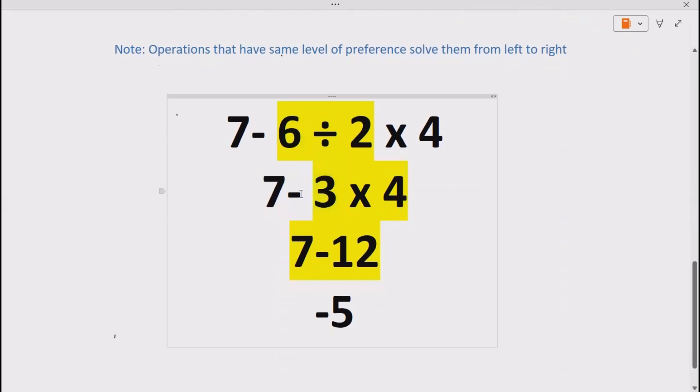Now we do multiplication according to BODMAS and PEMDAS. 4 multiplied by 3 gives us 12. 7 minus 12 gives us minus 5.